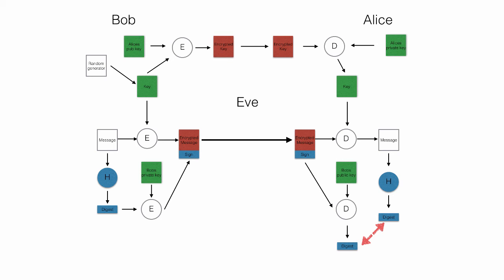Signing is when you make a hash and you encrypt it with your private key. When Alice receives the message she verifies the signature by decrypting it with the public key of the sender and verifying the digest against the digest she calculated herself. By doing that, Alice knows for sure that the encrypted message is coming from Bob and no one else.